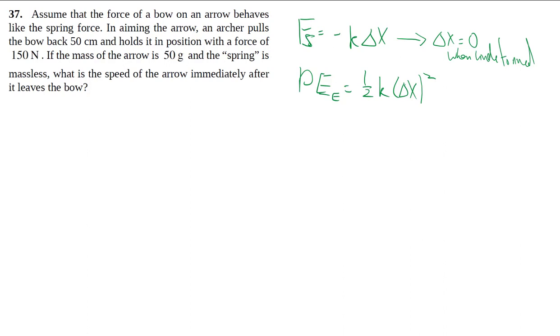But like any energy question, let's start by doing a before and after picture. So before, there's a bow, and you've pulled the arrow all the way back. And then afterwards, you let it go. Arrow is traveling fast. And the quote unquote spring in the bowstring is completely relaxed again.